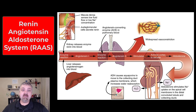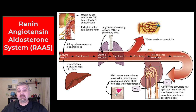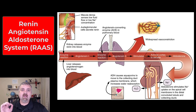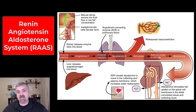Hey everybody, Dr. O here. This video is going to be about the renin-angiotensin-aldosterone system. Some people just call it the renin-angiotensin system, but aldosterone plays a big role. This is actually a special request — I've talked to a lot of former students and asked what they wish I'd taught more about, and the renin-angiotensin system continuously pops up. We usually only cover it with the kidneys, but I think it's important to talk about it now with the endocrine system and then review it again with the kidneys.